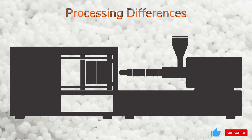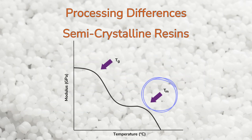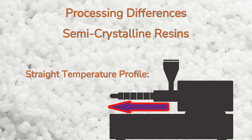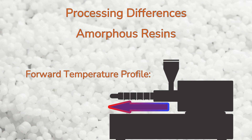In addition to the differences in the final molded part, there are also some differences between semi-crystalline and amorphous resins that are seen during processing. Semi-crystalline resins must reach their melting temperature to melt the crystalline regions before the material can flow. To achieve this efficiently in the barrel of an injection molding machine, all zones are usually set to the desired melt temperature — this is called a straight temperature profile. However, amorphous resins soften over a broad temperature range, so the feed zone is usually set cooler than the metering zone and the temperature is gradually increased as the resin moves towards the nozzle. This is called a forward temperature profile.